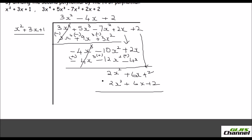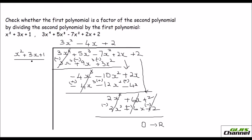When you subtract, change the sign. The 2x squared cancels, 6x and minus 6x also cancel, and plus 2 and minus 2 also cancel. So your remainder is 0. Since the remainder is 0, x squared plus 3x plus 1 is a factor of 3x to the 4th plus 5x cubed minus 7x squared plus 2x plus 2. So it is a factor.